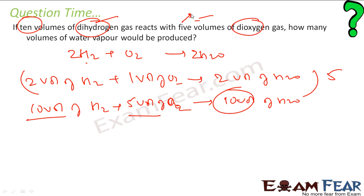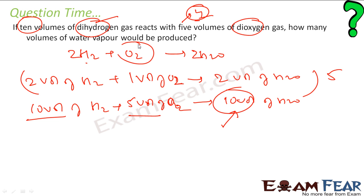If instead we had 4 volumes of dihydrogen, then oxygen would have become the limiting reagent and we would have got only 8 volumes of water. So those things you have to keep in mind. In this case there was no limiting reagent and everything got consumed, but sometimes oxygen or hydrogen can be a limiting reagent.